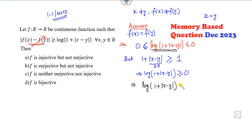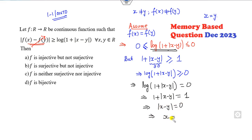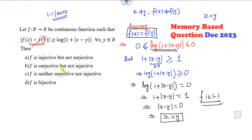So I've proved that this expression equals 0. The logarithm equals 0 only when its argument equals 1, meaning X minus Y equals 0, so X equals Y. Starting from F(X) = F(Y) we reach X = Y, which means F is 1-1, i.e., injective. So we can cancel out any options stating F is not injective.